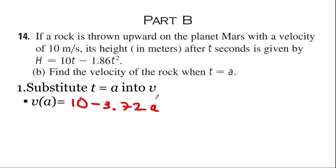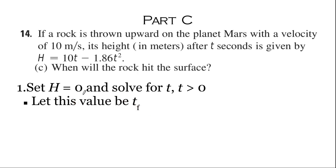Okay, and part c. We set H equal to 0. This step is a little longer, so H equals 0 equals 10t minus 1.86t squared. We notice that both of these have t in them, so we can just factor out a t. T is outside, we just have 10 minus 1.86t.